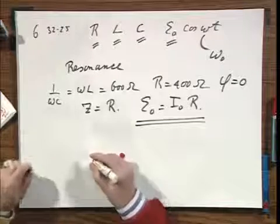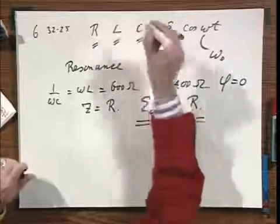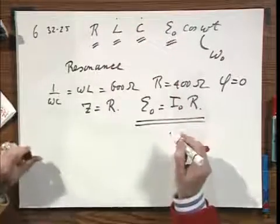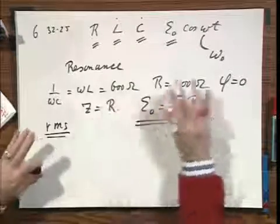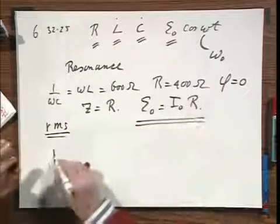Now, you're being asked what the voltmeters over each one of these would read if you attach them and if they were to read only the RMS values. That means no phase information. All the phase information is lost.